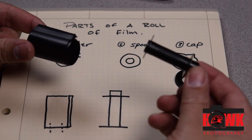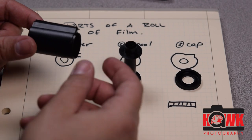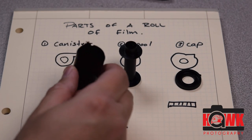The spool portion is the inside portion that the film will eventually wrap around. And the final component is the canister portion.